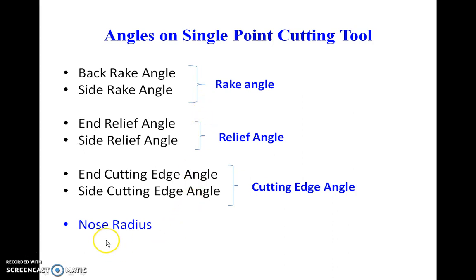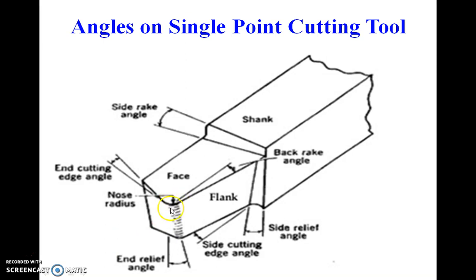Another important feature is the nose radius. The nose is made as a radius, not a sharp point, so that it helps improve the tool life in two ways: one is to prevent the accumulation of heat produced during the machining process, and the second is to clear the feed marks on the workpiece left by the cutting edge.